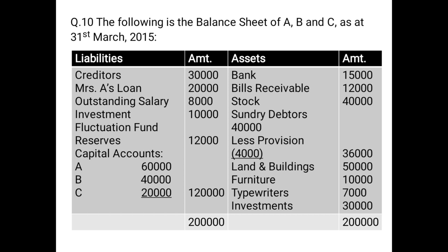As discussed in the previous question, creditors is an outside liability and will be transferred on the credit side of the realization account: by creditors 30,000. Then Mrs. A's loan 20,000 — since A is a partner but not Mrs. A, any loan from Mrs. A is an outside liability, transferred on the credit side: by Mrs. A's loan Rs. 20,000. Then outstanding salary 8,000 — again an outside liability, transferred on the credit side: by outstanding salary 8,000.